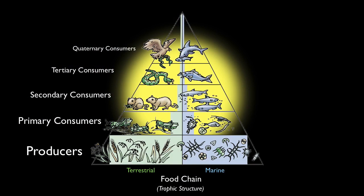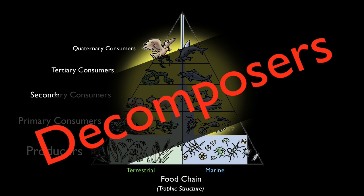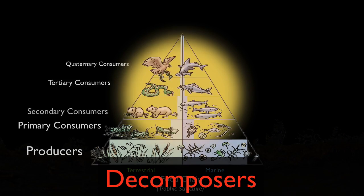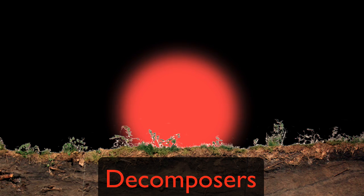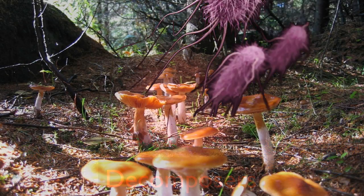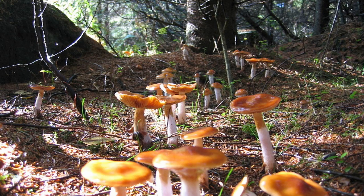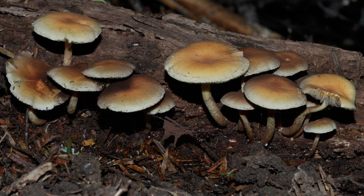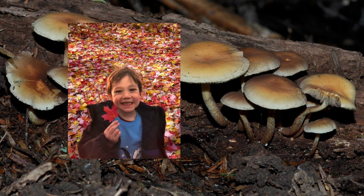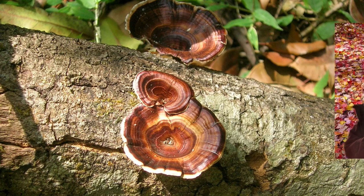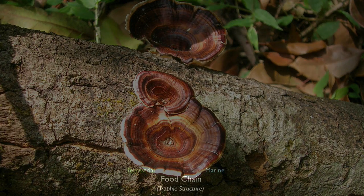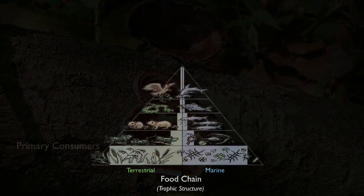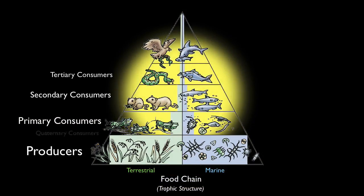Besides producers and consumers, ecological communities also need decomposers. Decomposers consume dead organic matter. What kind of decomposers do you know about already? Bacteria and fungi, right? These decomposers are responsible for ensuring that the leaves and branches of a forest floor don't pile up to greater heights year after year. Instead, the organic matter is broken down and ends up back in the soil to the benefit of future generations of producers and consumers.